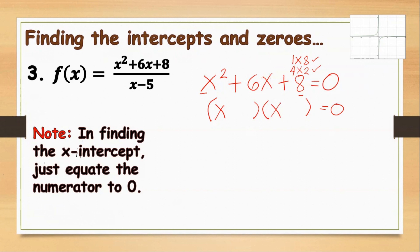1 plus 8 equals 9, so we don't use that pair. The remaining option is 4 times 2, and 4 plus 2 equals 6. Therefore, we use the factors (x plus 4) and (x plus 2).